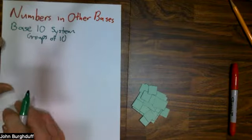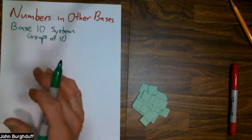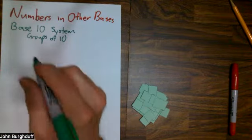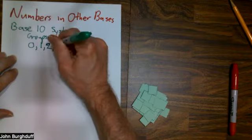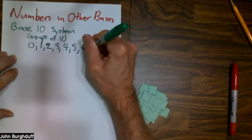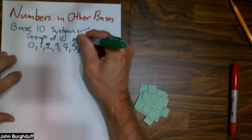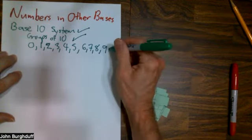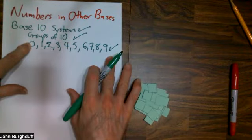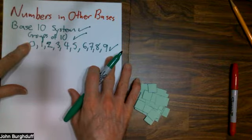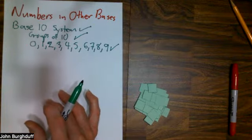So the big idea is you have groups of 10. And the place values represent groups of 10 as well. So if every time you count 10 of something, you put them into a group. The only digits that you need for base 10 are 0, 1, 2, 3, 4, 5, 6, 7, 8, and 9. Base 10, groups of 10, count these, and you'll see that there are 10 digits.